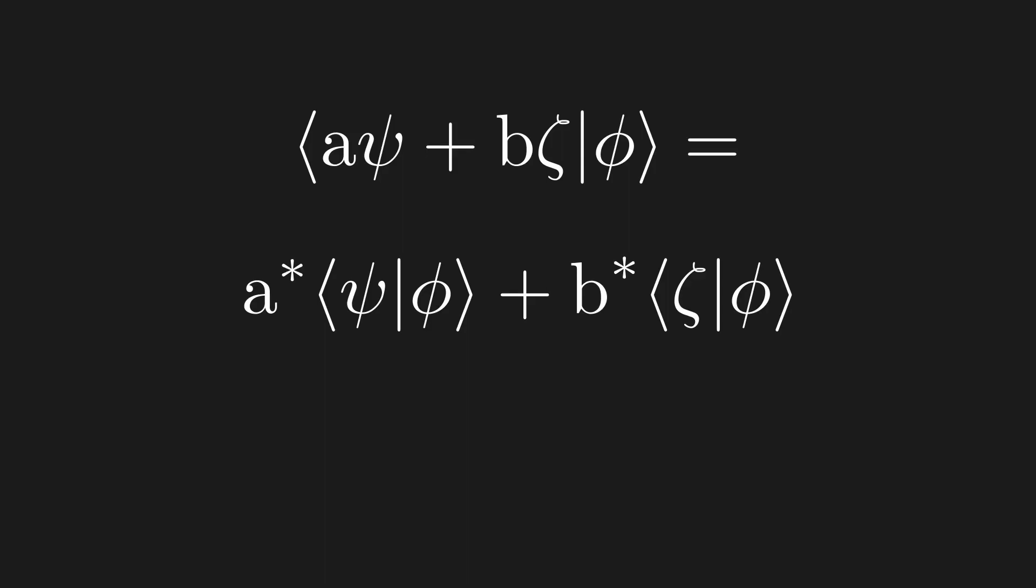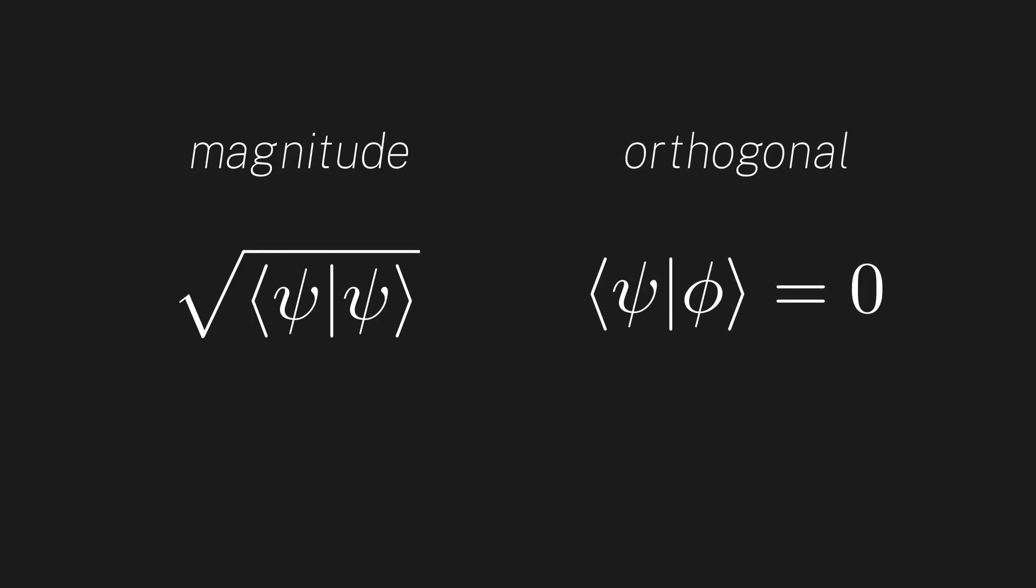So, although the right slot acts linearly, the left slot acts what we call antilinearly, where the coefficients are conjugated. Great, let's establish a few more things about the inner product. Following our intuition from the dot product, we will define the magnitude of a ket to be the square root of its inner product, and we will say that two vectors are orthogonal if their inner product is 0.